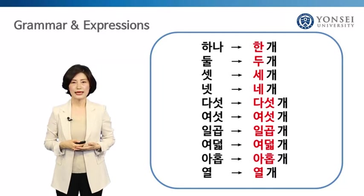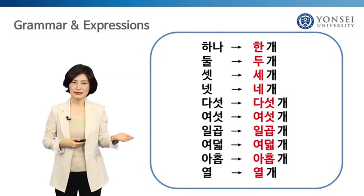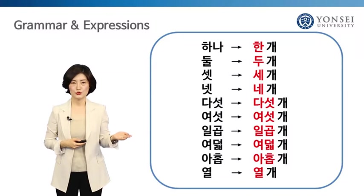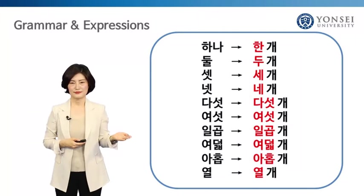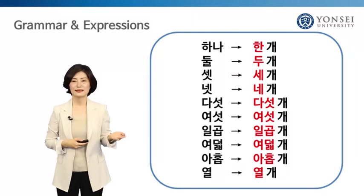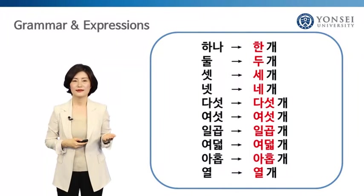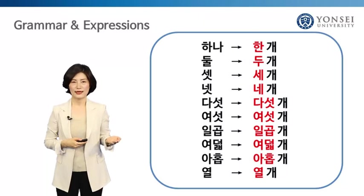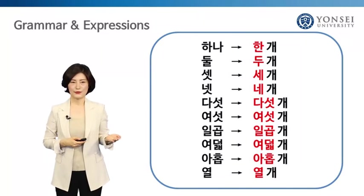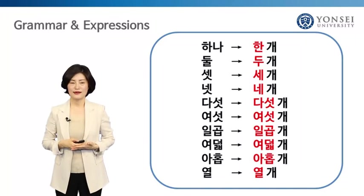Now let's look closely at how the words are combined. First, the unit 개: 하나 → 한 개, 둘 → 두 개, 셋 → 세 개, 넷 → 네 개, 다섯 → 다섯 개, 여섯 → 여섯 개, 일곱 → 일곱 개, 여덟 → 여덟 개, 아홉 → 아홉 개, 열 → 열 개.